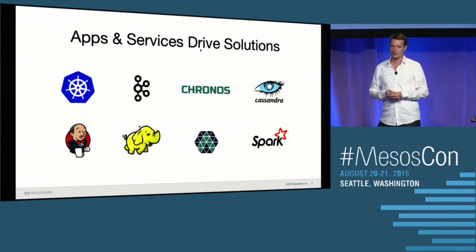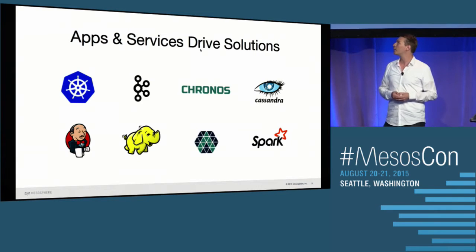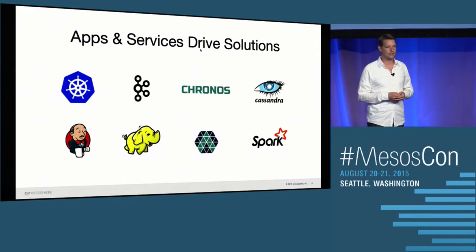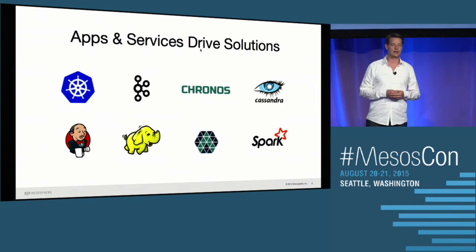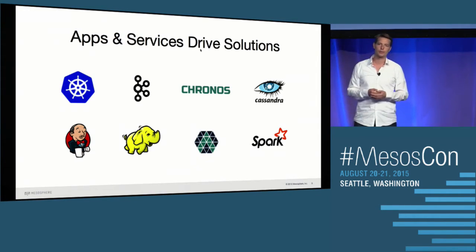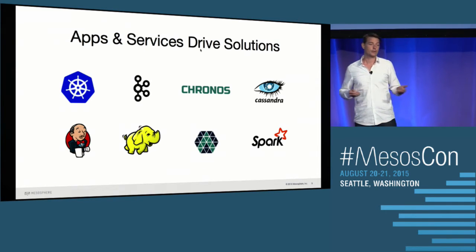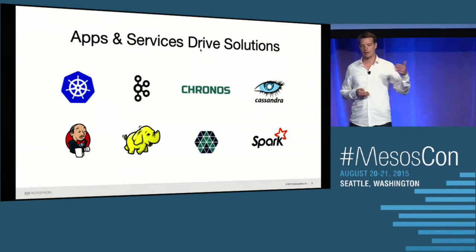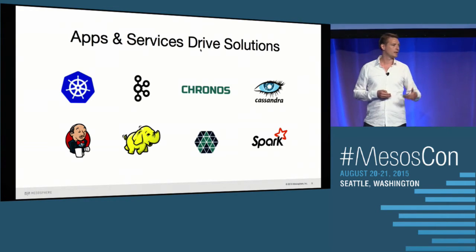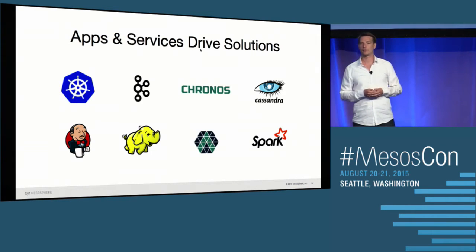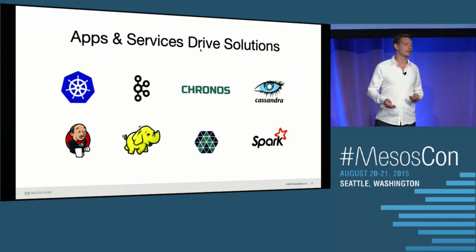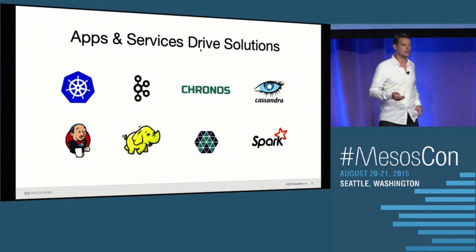We're not the only company putting money and resources into this ecosystem. Intel and Cisco are here and heavily investing. Google brought Kubernetes and has been really helpful in getting the Mesos-Kubernetes integration back into the Kubernetes core. Other companies like Elodina, which is Joe Stein's company, are bringing the Kafka framework to Mesos. And Airbnb brought Kronos into the Mesos ecosystem. We'll see more and more frameworks that solve business problems over the next couple of years.